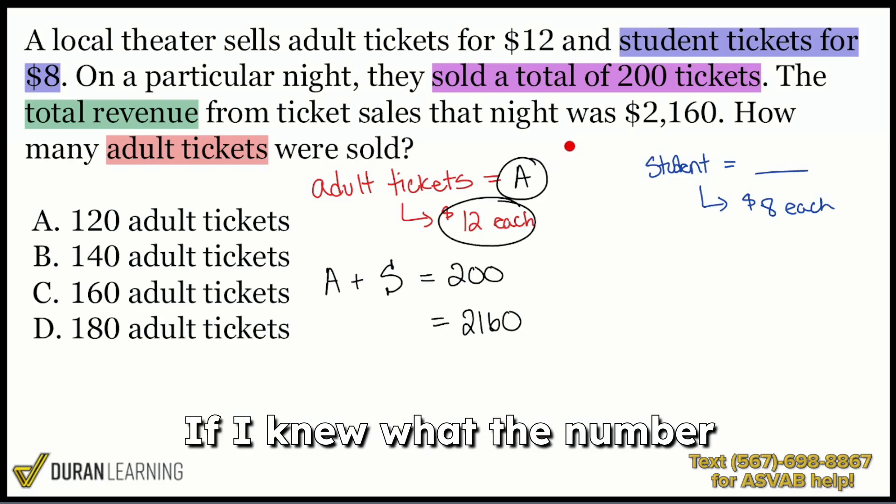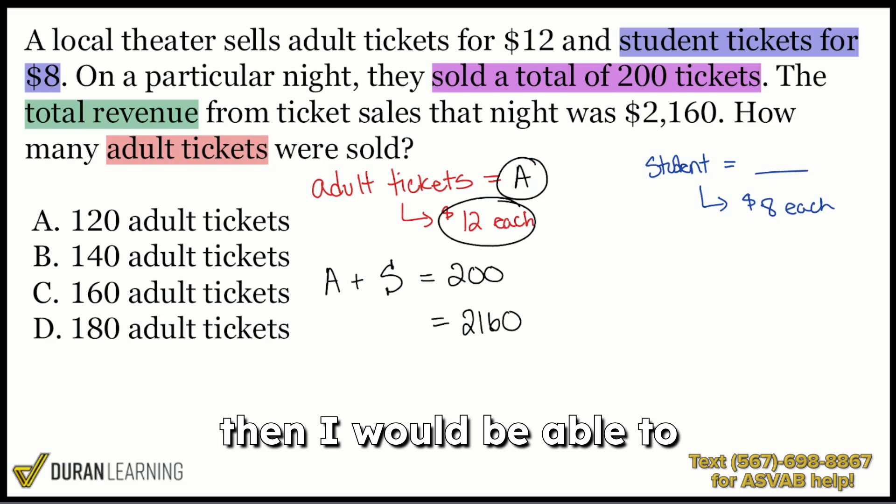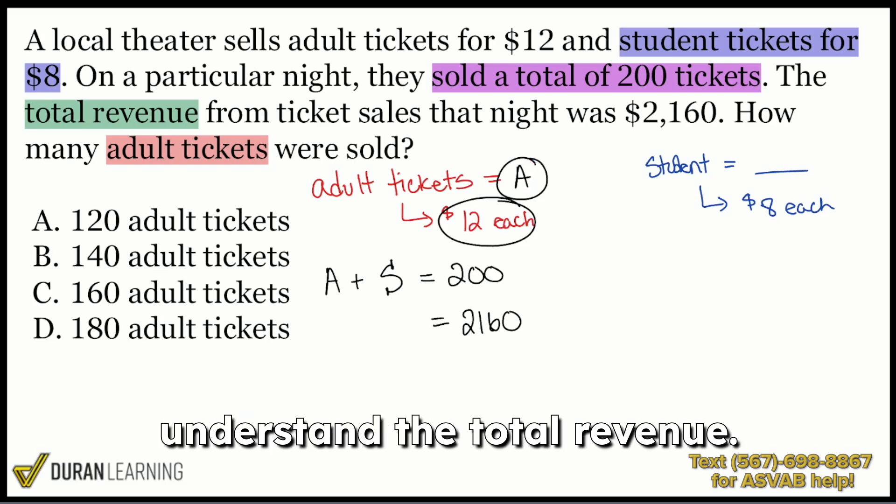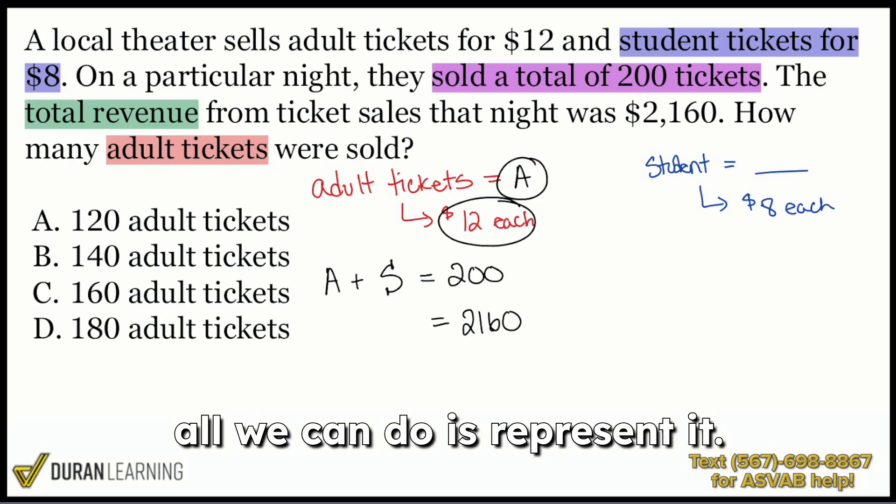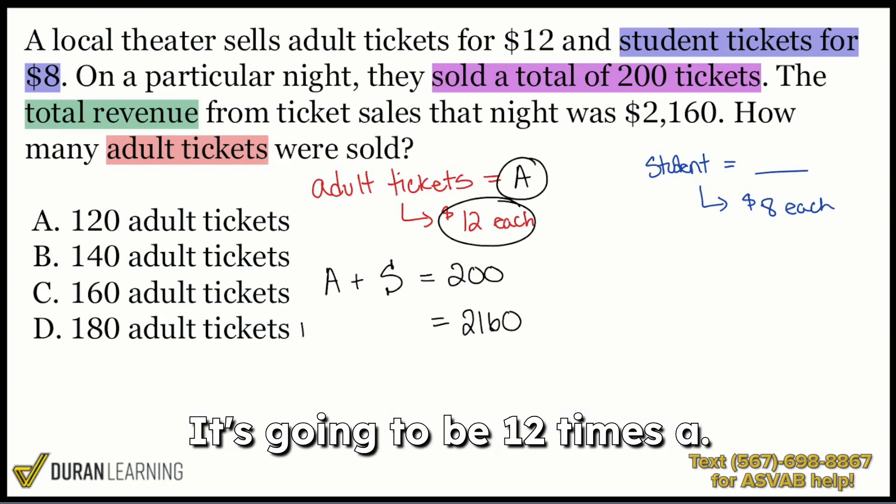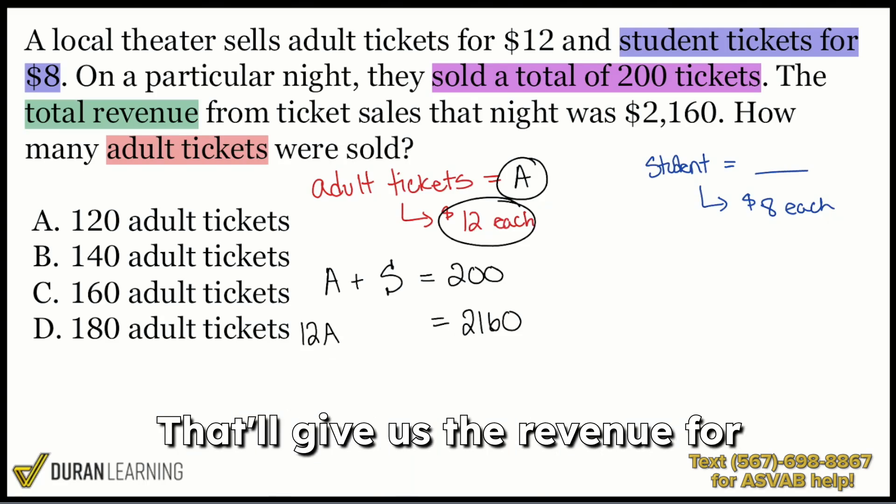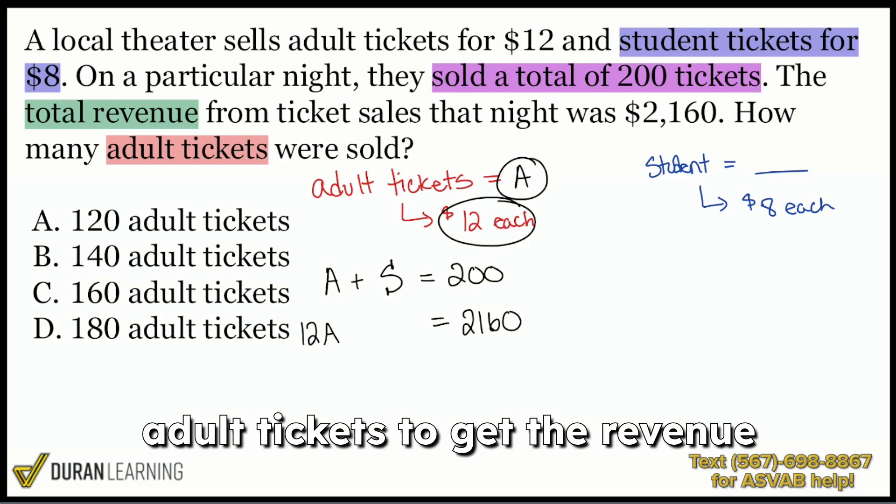So think about how I'm wording that. If I knew what the number of adult tickets was, then I would be able to understand the total revenue. But since we don't, all we can do is represent it. And this is how we're going to do it. Total revenue from adult tickets, it's going to be 12 times A. Whatever A is, whatever the amount of adult tickets was, that'll give us the revenue for adult tickets.